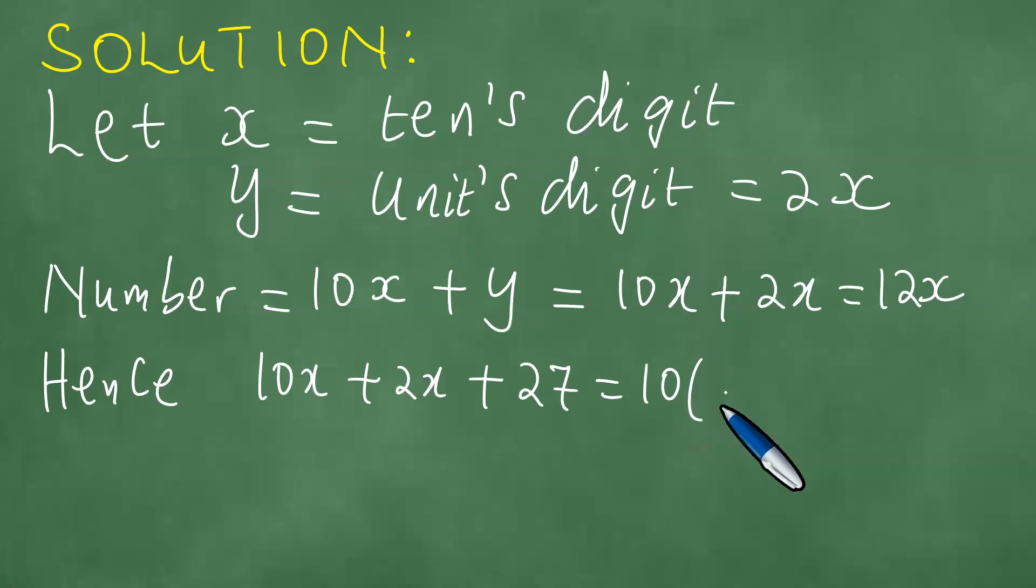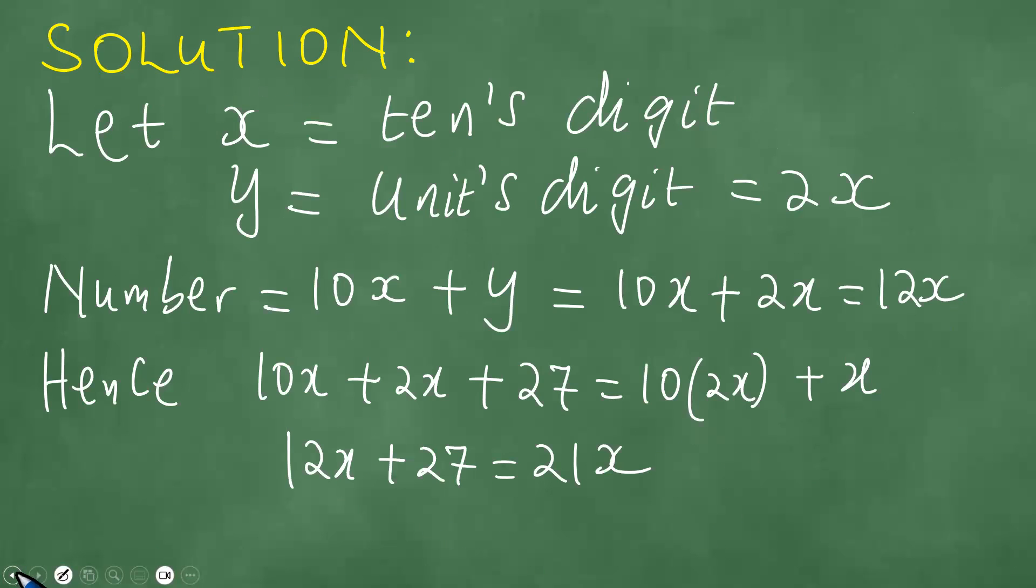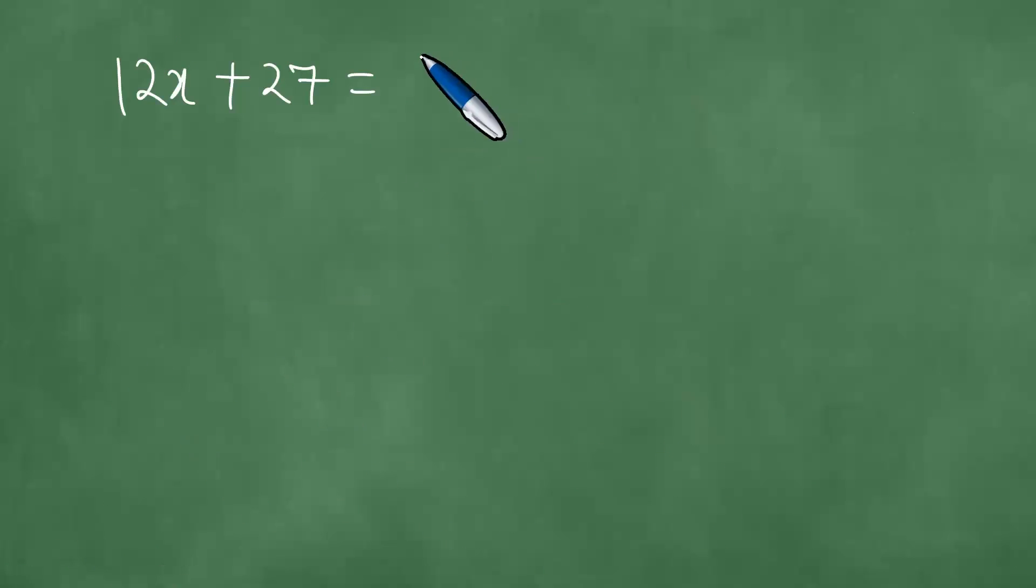The digits will interchange places, and therefore you're going to have 2x here and x here. This is 12x plus 27, which is actually 20x plus x, which is 21x. What we have is 12x plus 27 equals 21x.